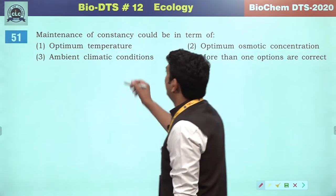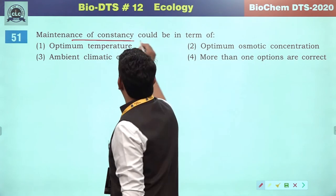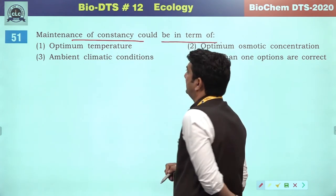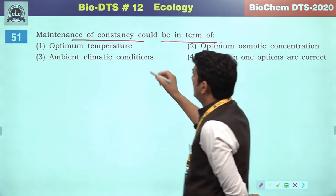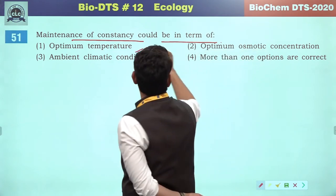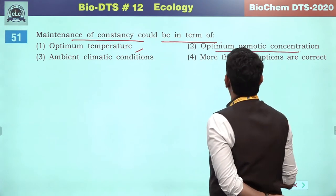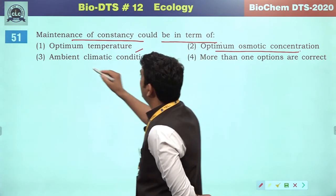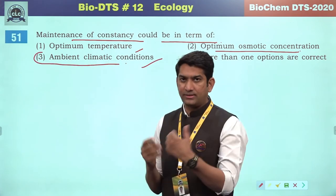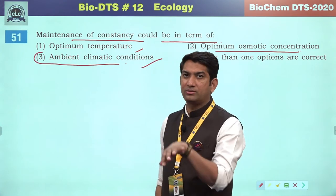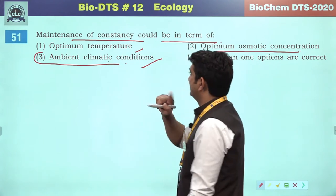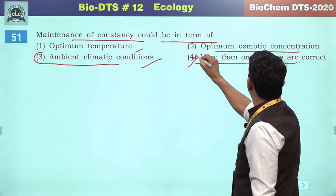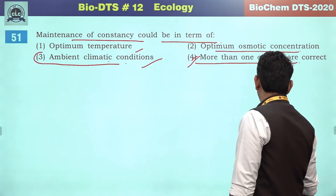The pyramid of energy is always upright. So the second will be the incorrect reference — the second answer.